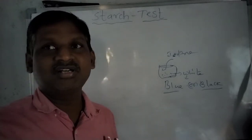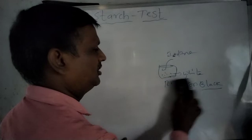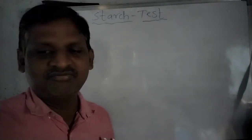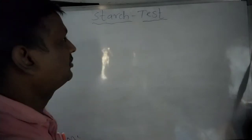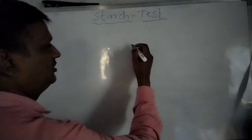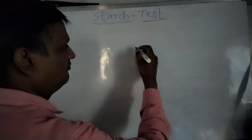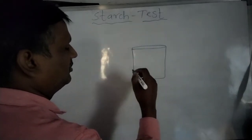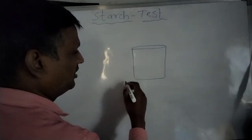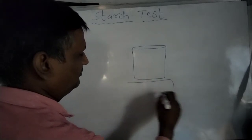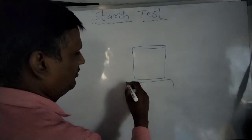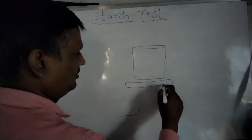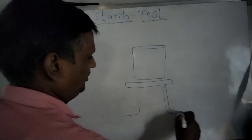Now, how can we find out the starch present in plants? Here is an activity we shall go through. To find out the starch in plants, first we need to take a beaker, which should be kept on a tripod stand.